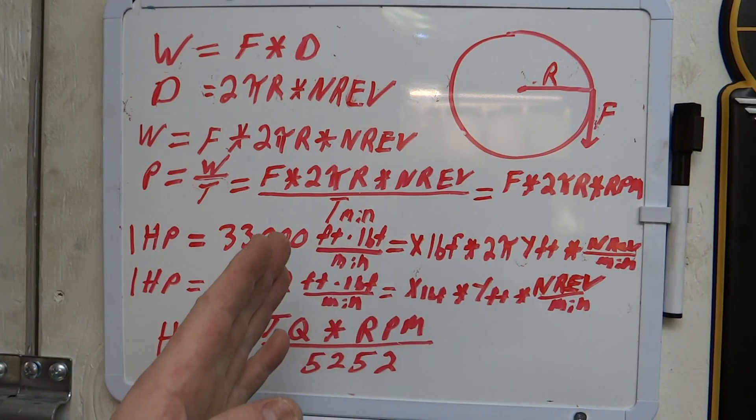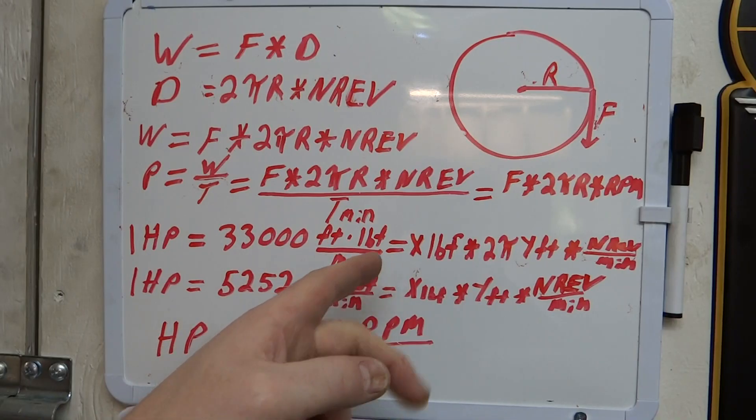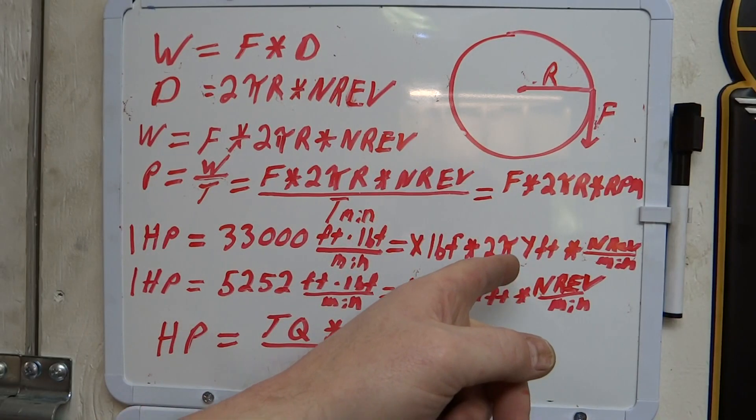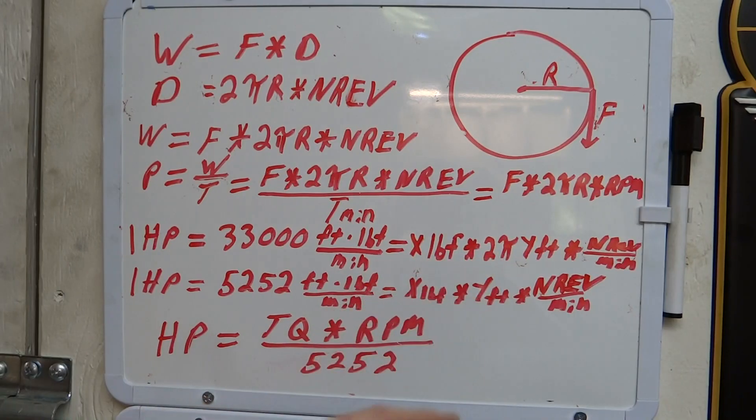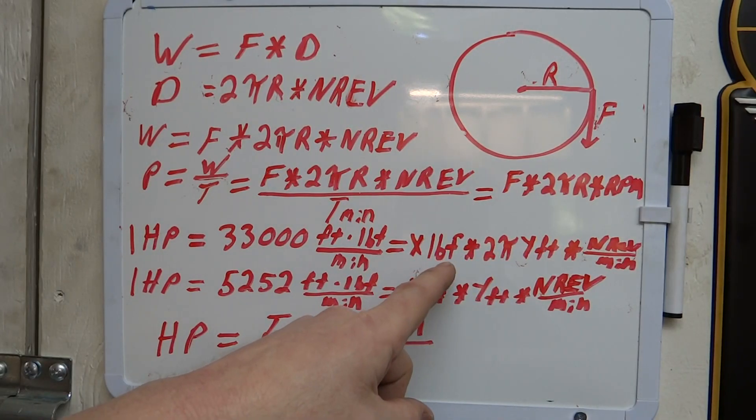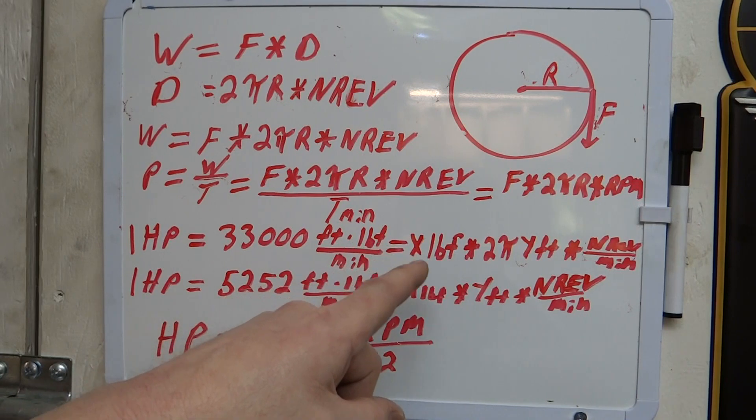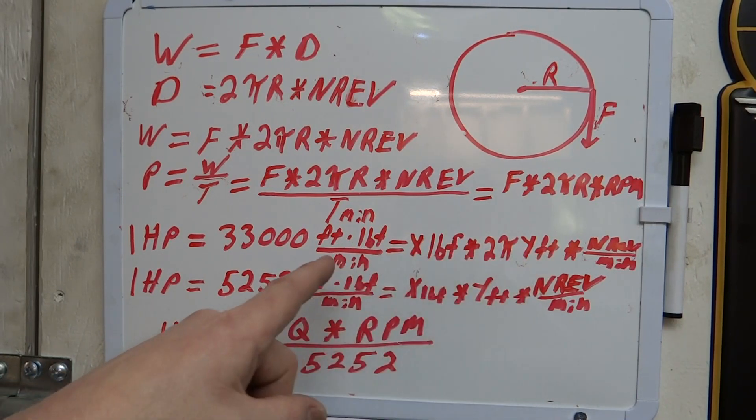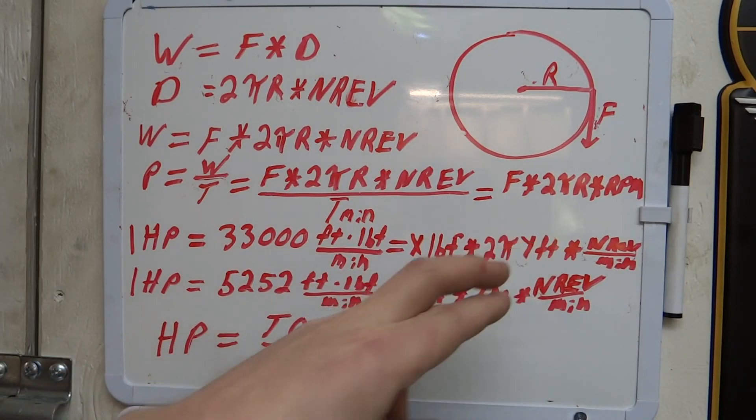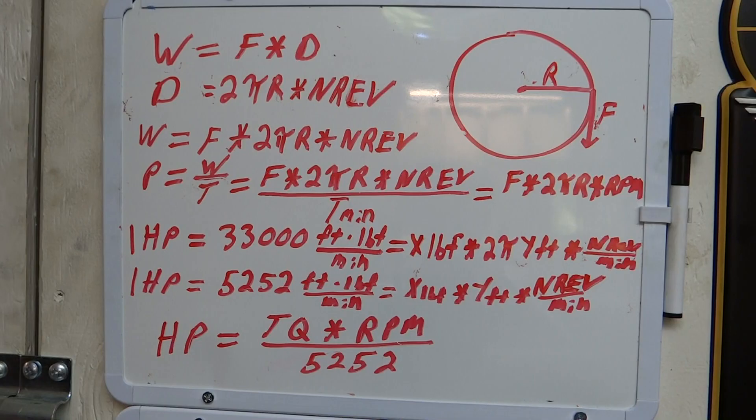For the units on this side of the equation symbol to match the units on this side of the equation symbol. So you can see here that pounds of force here cancels that one out, feet cancel out here, and minutes cancel out there. So the units on this side match the units on that side. If they didn't match, then you'd know there was something wrong with the way you were representing this.